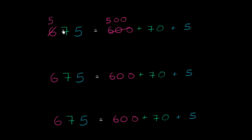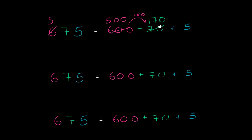And we could give that 100 to the tens place. If you give 100 to the tens place and you already had 70 there, it's going to be equal to 170. And 170 is 17 tens, so we could say that 7 becomes a 17.